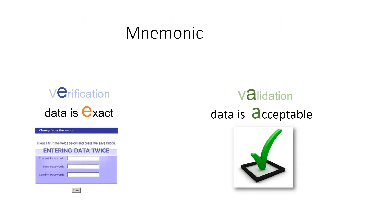Here's a little mnemonic to remember the difference between verification and validation: the E in vErification stands for Exact, and the A in vAlidation stands for Acceptable.